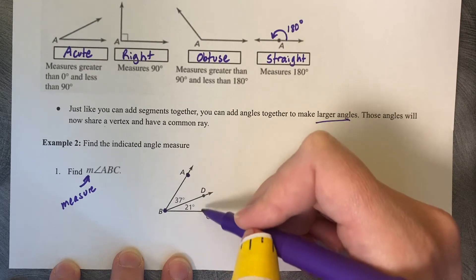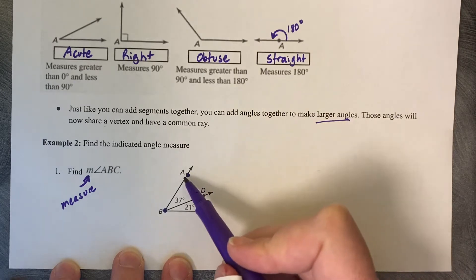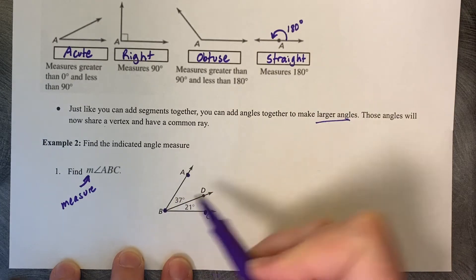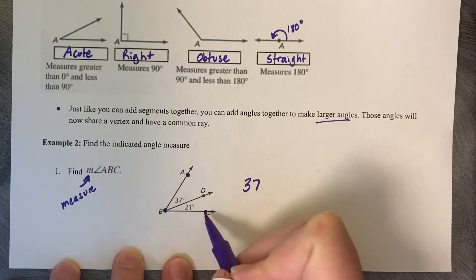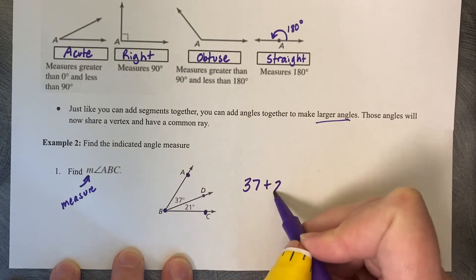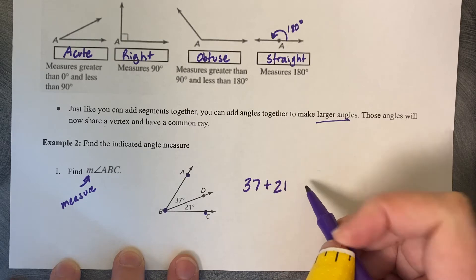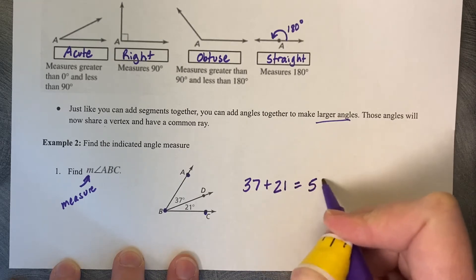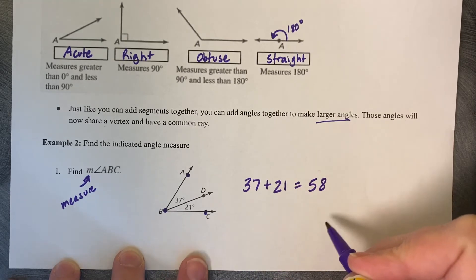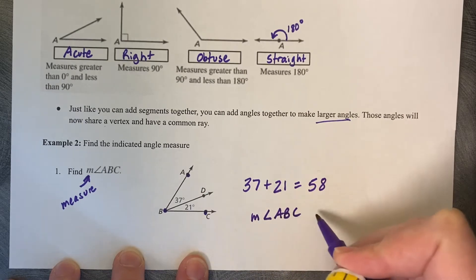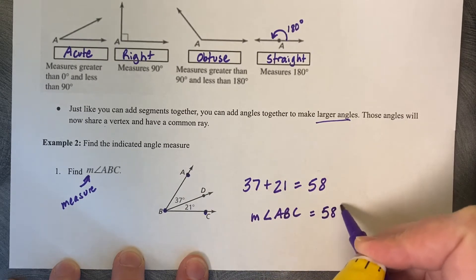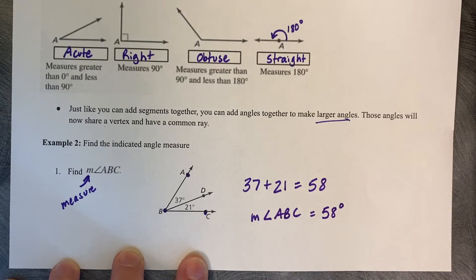So how much does that measure? Well angle ABD is 37 and DBC is 21 degrees. So 37 and 21 makes 58. So our final answer, the measure of angle ABC is 58 degrees with a degree symbol on it.